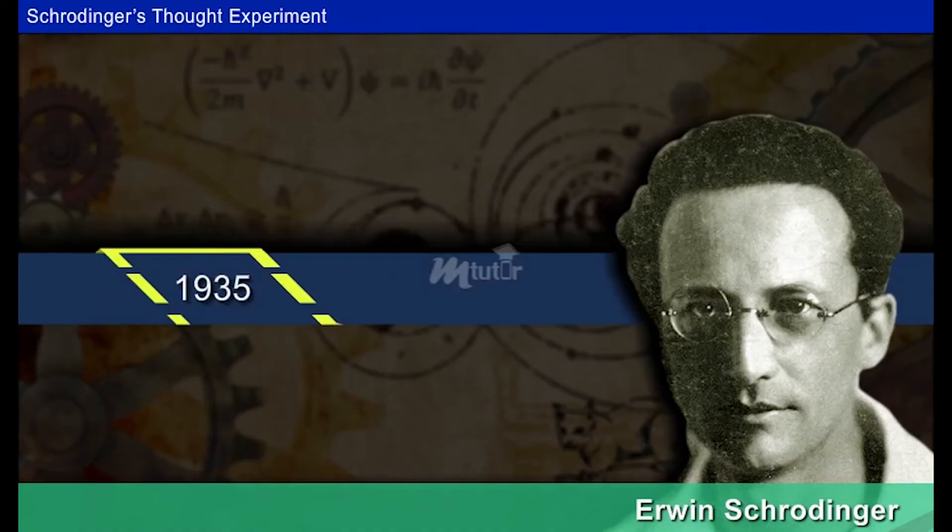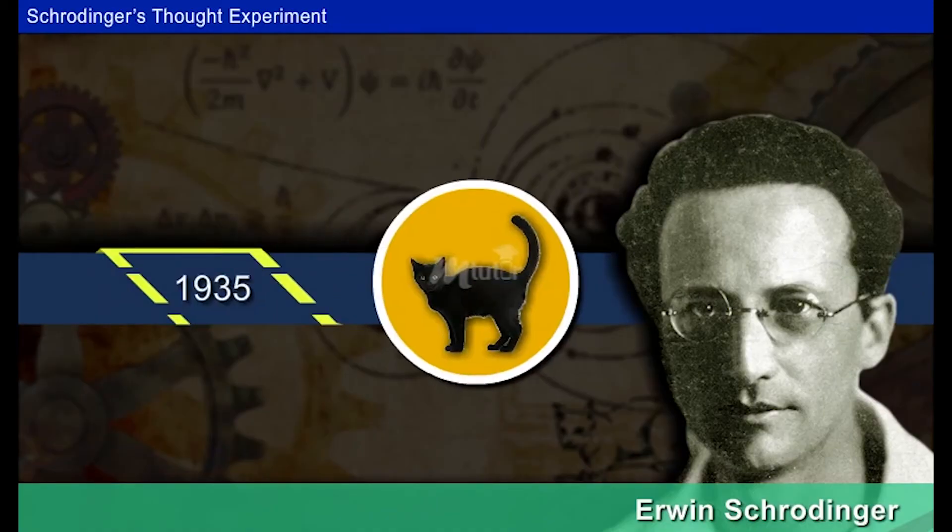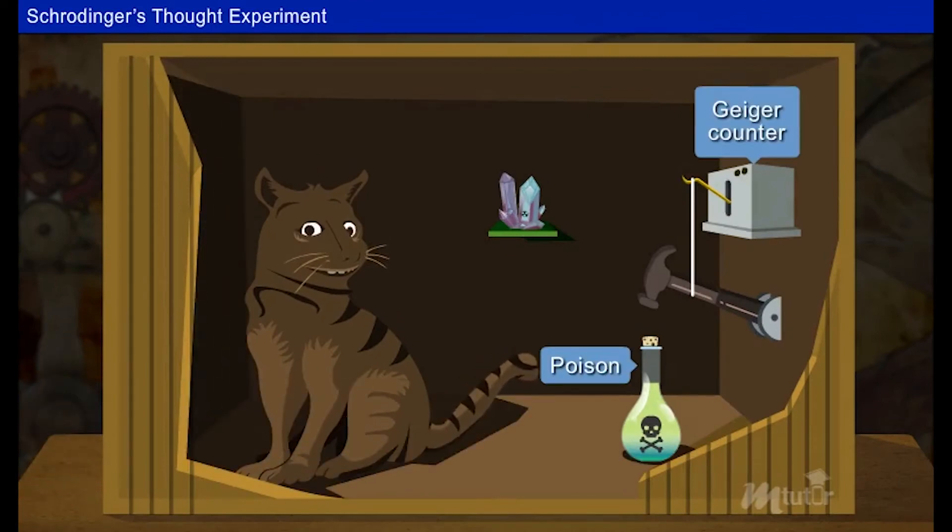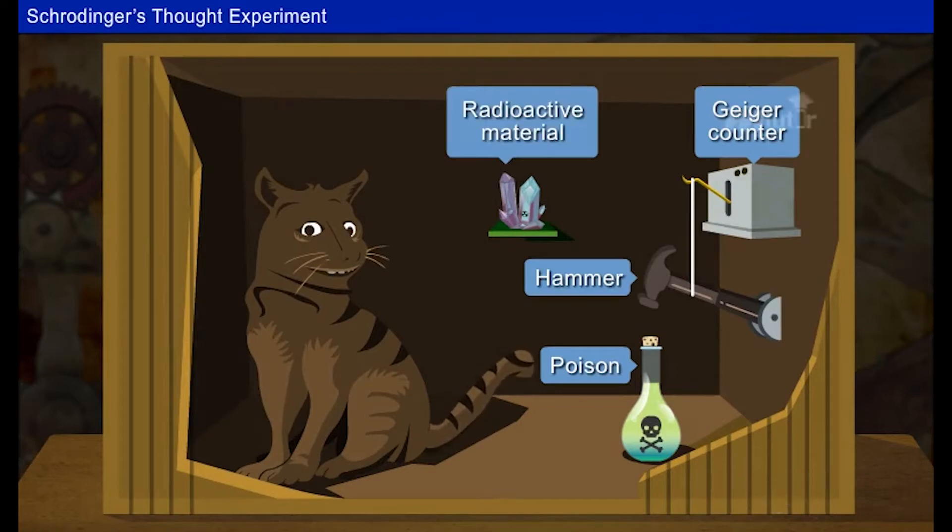In 1935, Erwin Schrödinger made a thought experiment with a cat which portrays quantum mechanics. He put a cat into a box along with a flask of deadly poison, a Geiger counter connected with a hammer, and a small bit of radioactive material.